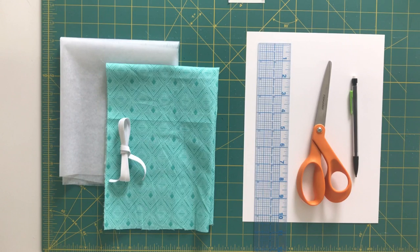To make your mask you will need cotton fabric, lightweight fusible interfacing, quarter-inch knit elastic, a pencil, scissors, ruler, and piece of paper to make your pattern, and of course basic sewing supplies like a sewing machine, thread, and pins.